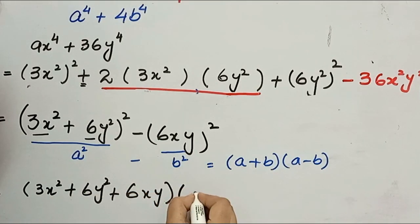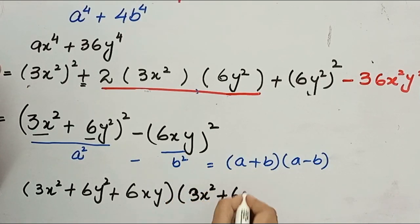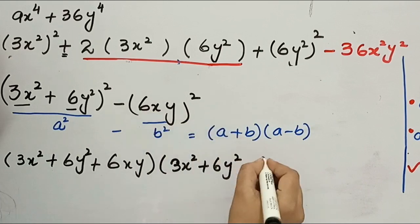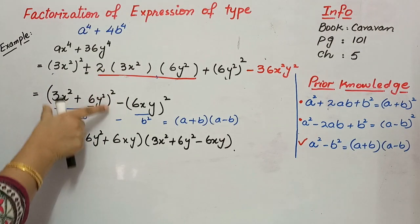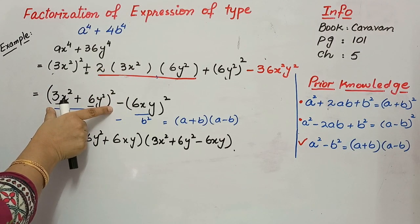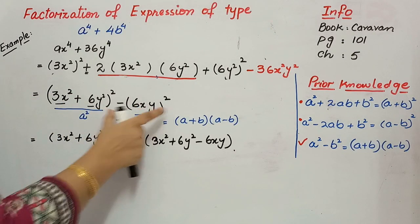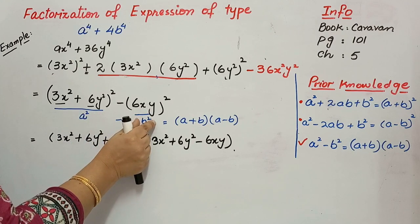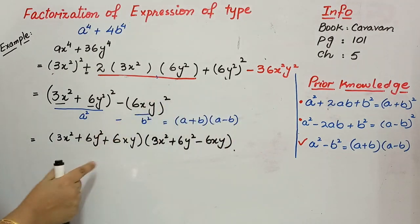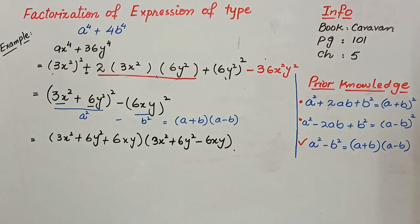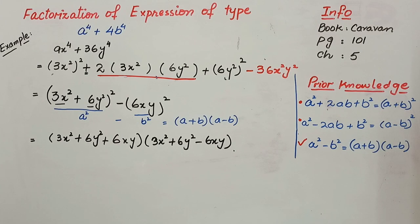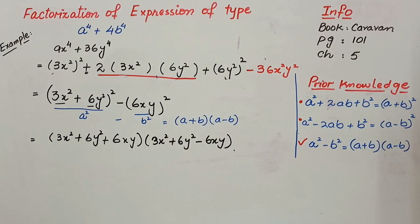So the factors are (3x² + 6y² + 6xy)(3x² + 6y² − 6xy). To summarize: complete the square, subtract the extra term, then apply a² − b² = (a + b)(a − b) to get the two factors. I hope you have understood. In our next lecture we are going to discuss Exercise 5.2, Question 1. Keep watching, stay blessed and keep smiling. Allah Hafiz.